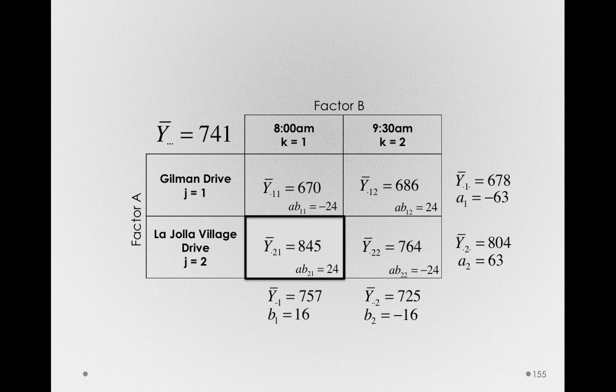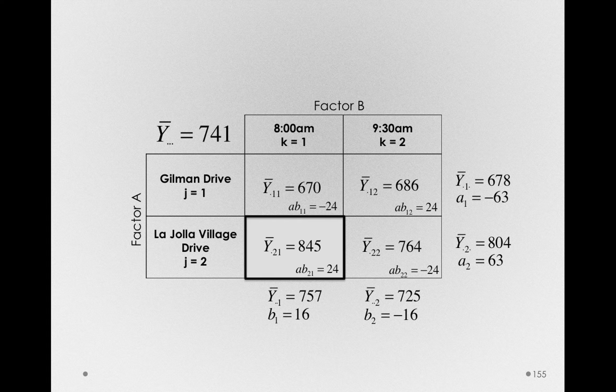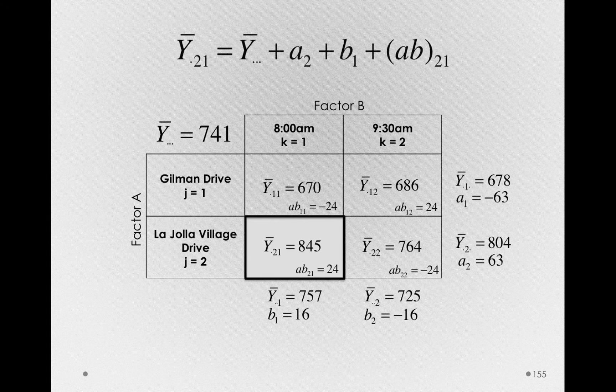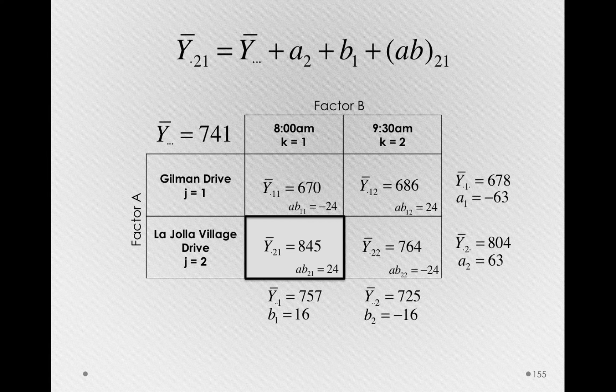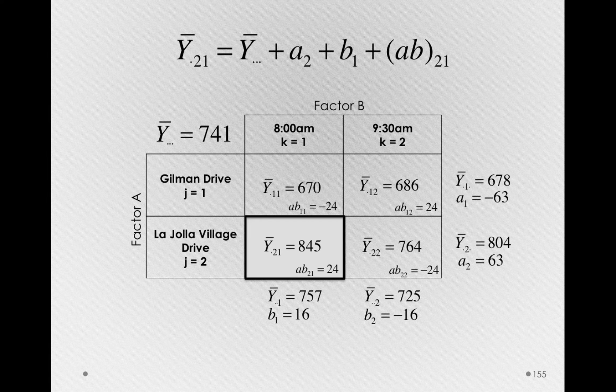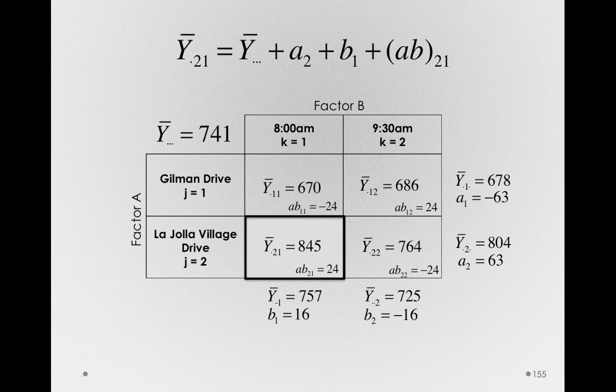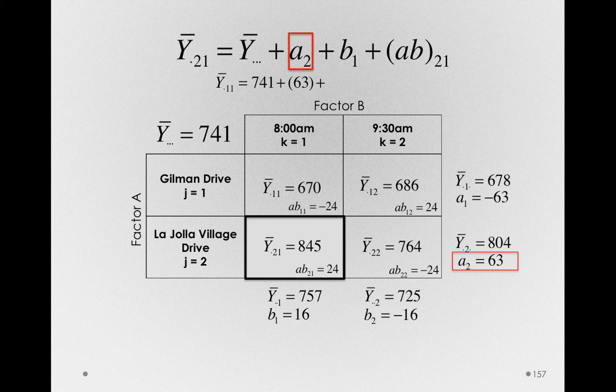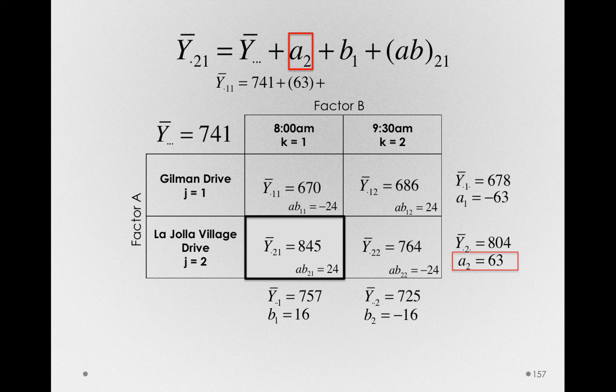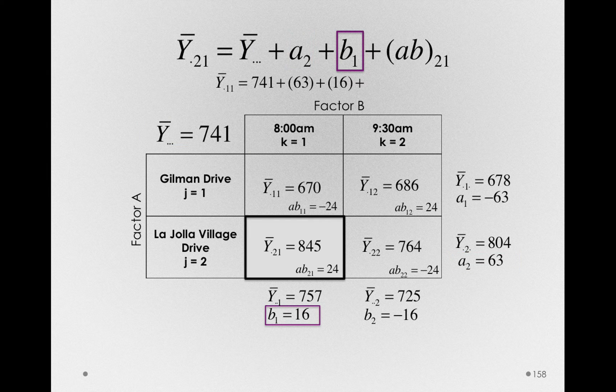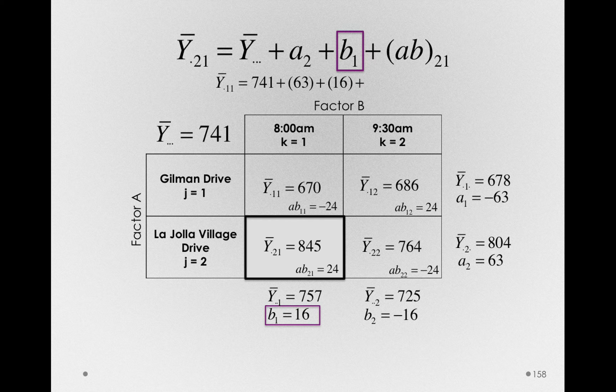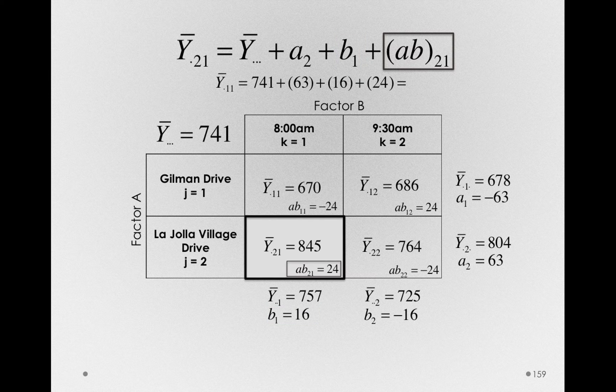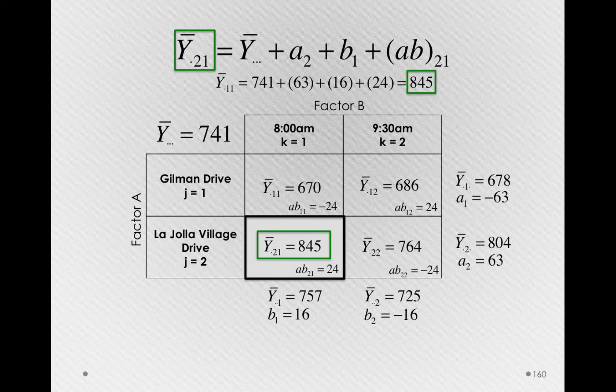Let's try this for La Jolla Village Drive at 8am. Notice we're looking for a different mean and we're going to use different pieces. So here's how we would write the mean for La Jolla Village Drive at 8am. Y bar dot two one is equal to the same grand mean 741 plus 63 in this case, the value of A2, plus 16, the value of B1, plus 24, the value of AB two one. And this gives us 845.